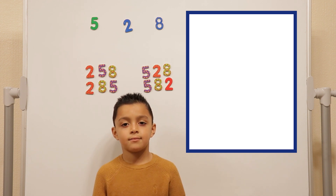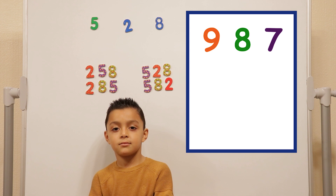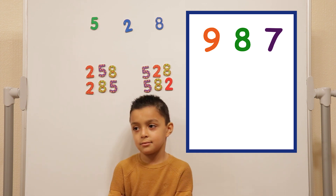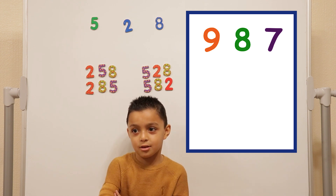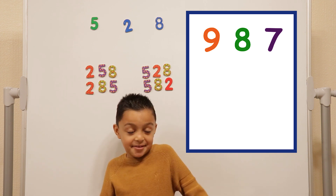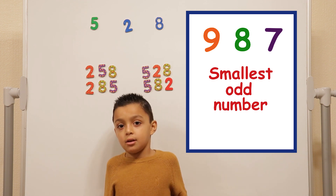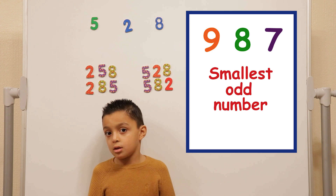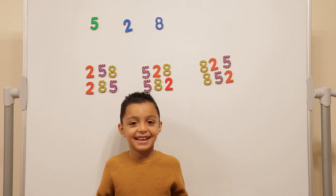Last one — it's going to be tricky. The numbers are nine, eight, and seven. What is the smallest odd number you can make with nine, eight, and seven? Seven hundred and eighty-nine. Correct!